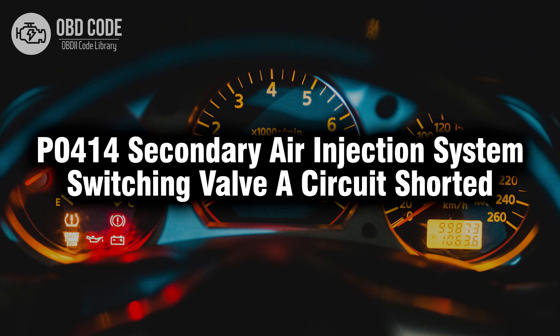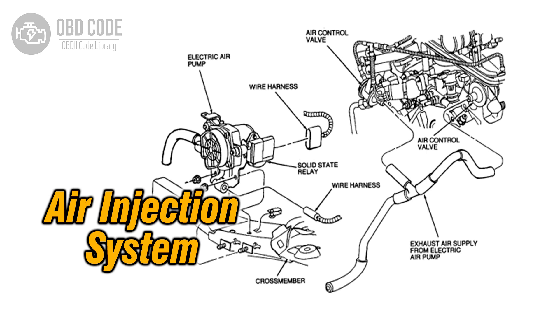Welcome. In this video we will talk about code P0414, its symptoms, causes and possible solutions. The P0414 trouble code is associated with the secondary air injection system switching valve circuit shorted, indicating a short circuit issue with the switching valve in the secondary air injection system.